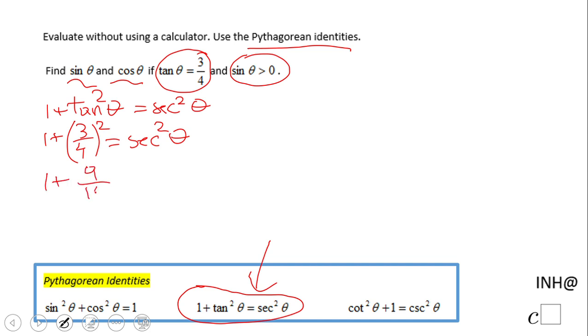Three-fourths squared is 9 over 16. And then we have 1 plus 9 over 16. 1 is 16 over 16, so that will be 25 over 16.